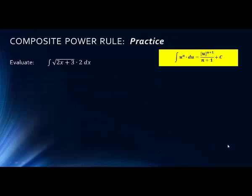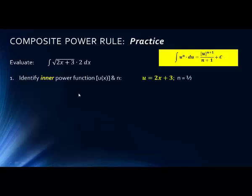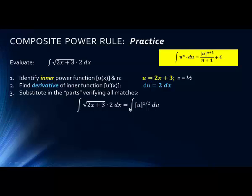Let's look at another example: the integral of the square root of (2x + 3) times 2 dx. Remember that a radical is actually an exponential — we can rewrite radicals as powers — so this is (2x + 3) to the 1/2 power. We identify the power function as the inner expression being raised to a power: u = 2x + 3, with exponent 1/2. The derivative of that is just 2 dx, and we can see we have all the pieces needed. So √(2x + 3) · 2 dx equals u^(1/2) du.